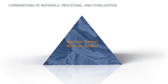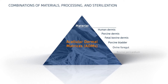When selecting an ADM, there are three key variables to consider. Different combinations of these variables will yield very different matrices with very different functional properties. The first of these factors is the source material, which can include allogeneic and xenogeneic tissues, as well as dermal and non-dermal options.